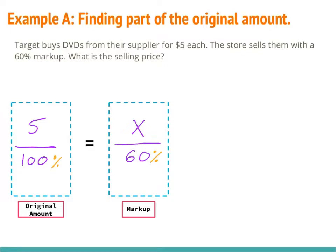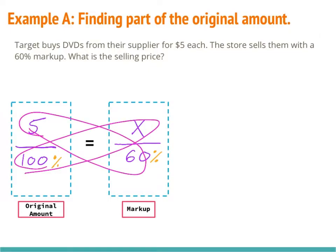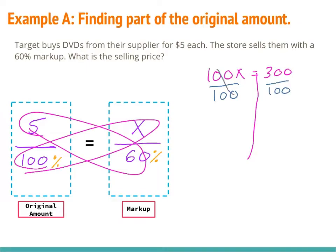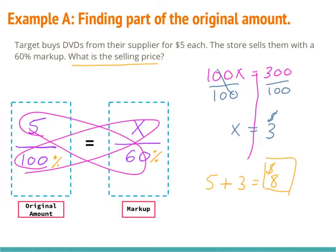Now I'm going to cross multiply. 100 times x is 100x, and 5 times 60 is 300. I'll draw my wall and divide both sides by 100 — the 100s cancel, leaving x equals 3. That gives a word answer of $3. But let me check: the question asks for the selling price, not just the markup. So I need to take $3 plus the original $5, which gives $8. They are selling the DVDs for $8, and that is the final price.